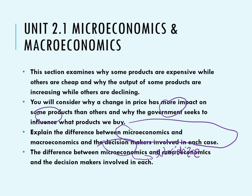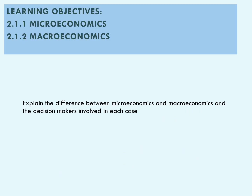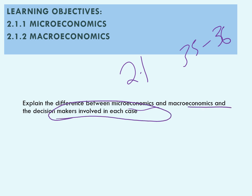So we will be explaining the difference between micro and macroeconomics and the decision makers involved in each case. Who decides what to do — is it the private sector, is it the public sector, and what's the difference between these two sectors?